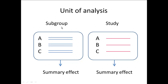That's one option — we call that using subgroup as the unit of analysis. A separate option is to take the two results within study A, merge them to get a single estimate for study A, and similarly merge the two subgroups within study B to get a single estimate for study B, and again for study C. We then end up with three independent estimates and combine those to get a summary effect. Let me show you how to use either option, and then we can talk about which is appropriate in which cases.